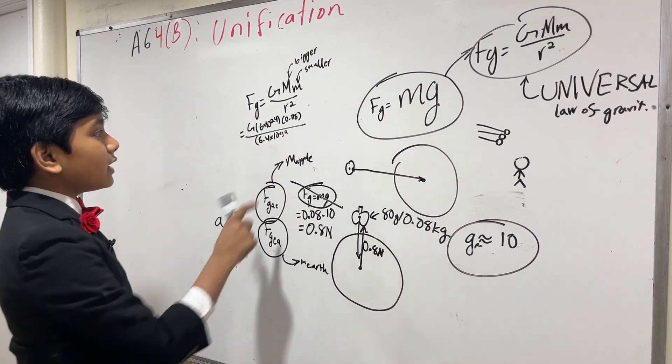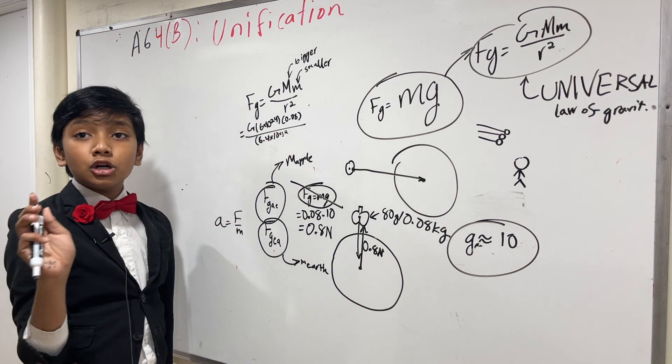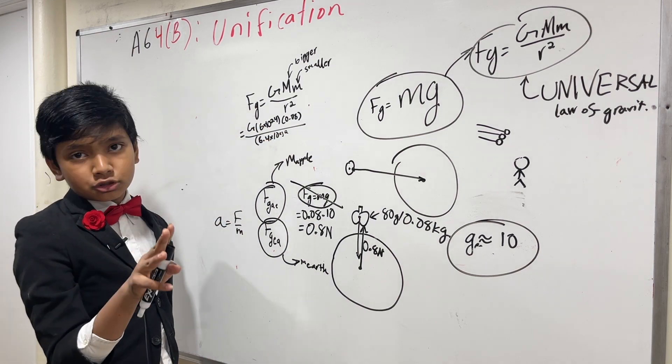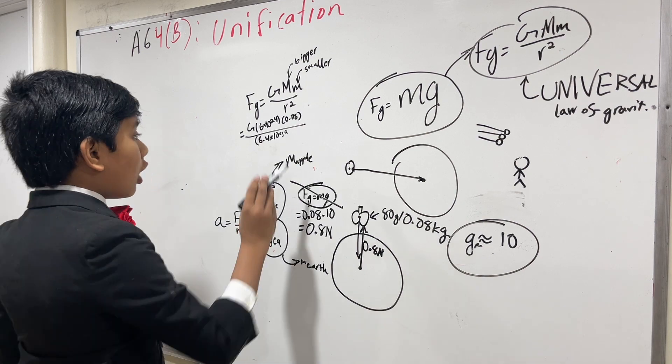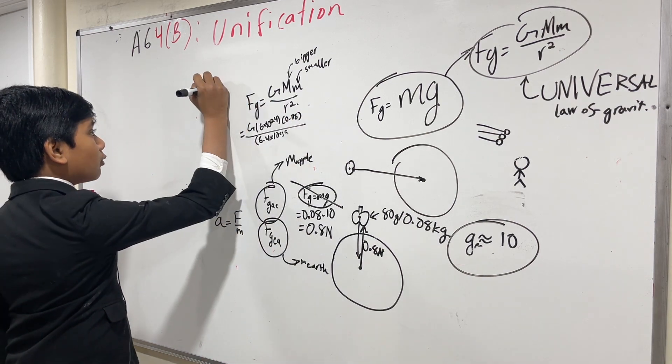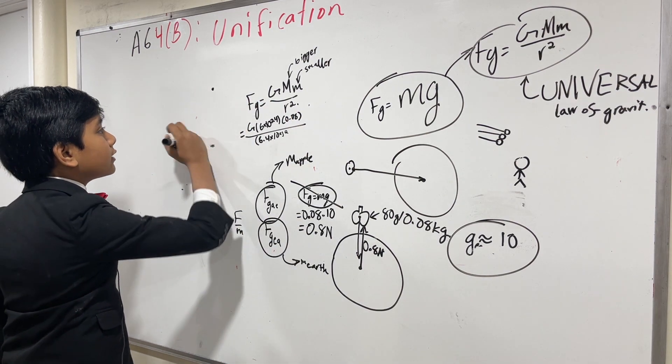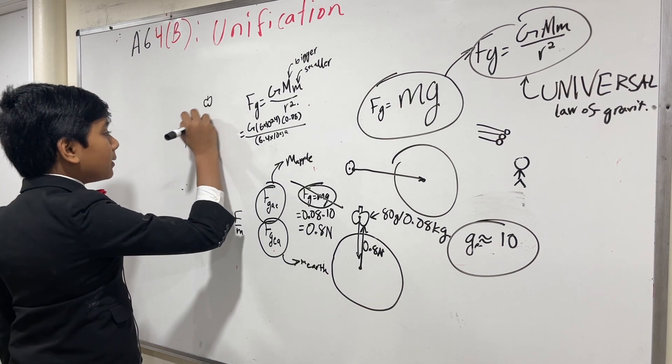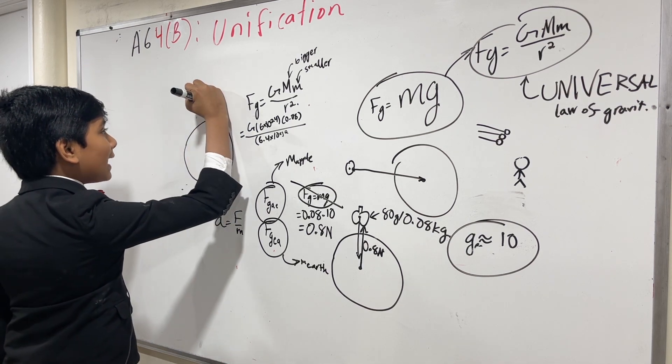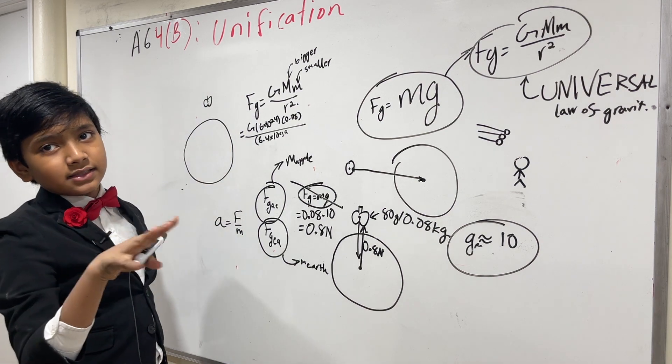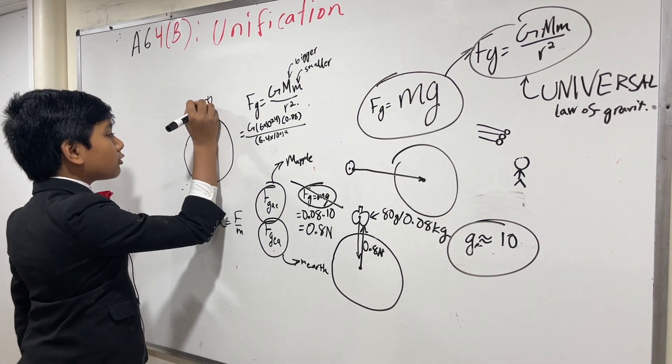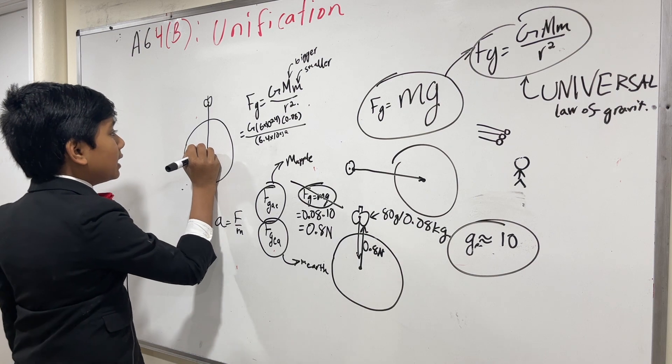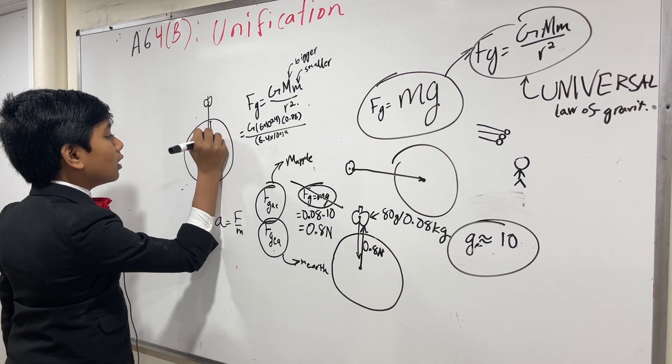And, if this wasn't clear what r meant, r is not the distance from surface to surface. No, no, no. r is the distance from one center to the other center. And, the thing is, in comparison to the earth, the apple's radius is basically negligible. So, we can just use the radius of the earth as the distance between the two objects.